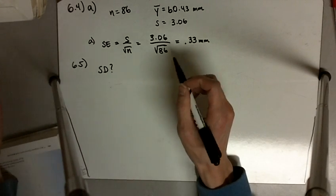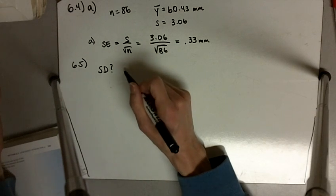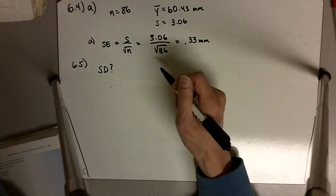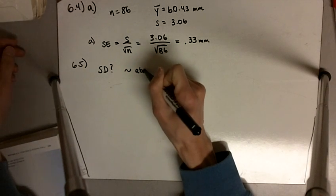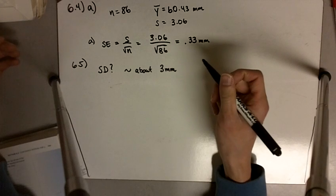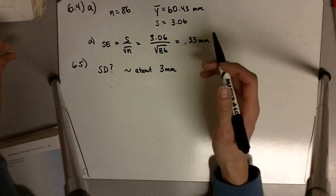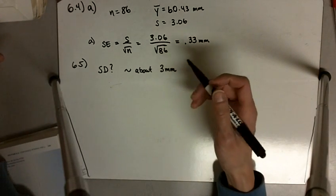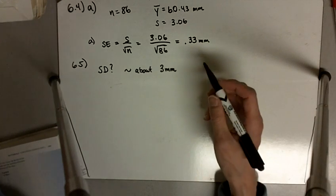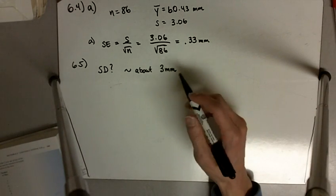So I'm going to say about 3 millimeters. This is how much the data, or in this case, how much the tail lengths differ from one another within our sample. In this case, it's going to still be about 3 millimeters, even though we've increased the sample size.